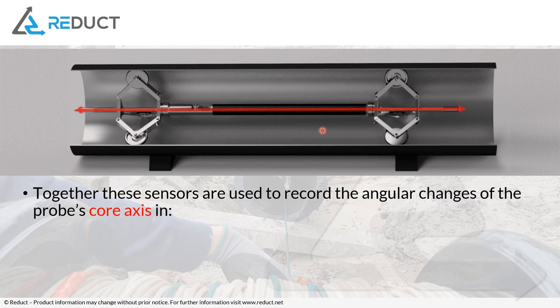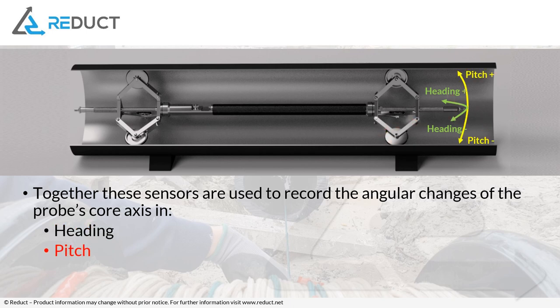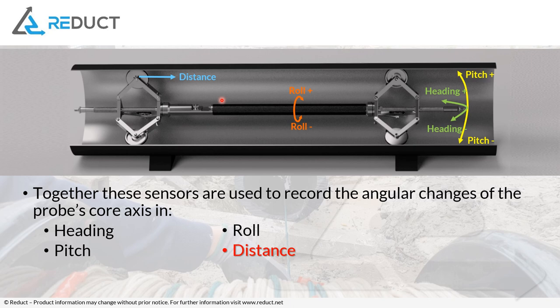Fundamentally, it records the changes in heading, in pitch or inclination, in roll, and lastly the odometer tells it what distance is traveled or what speed it's traveling at. It does this at 100 hertz, or 100 samples per second. So that means if you're traveling at one meter per second, you get about a point per centimeter, which is high frequency. I'll come back to that a little bit later.